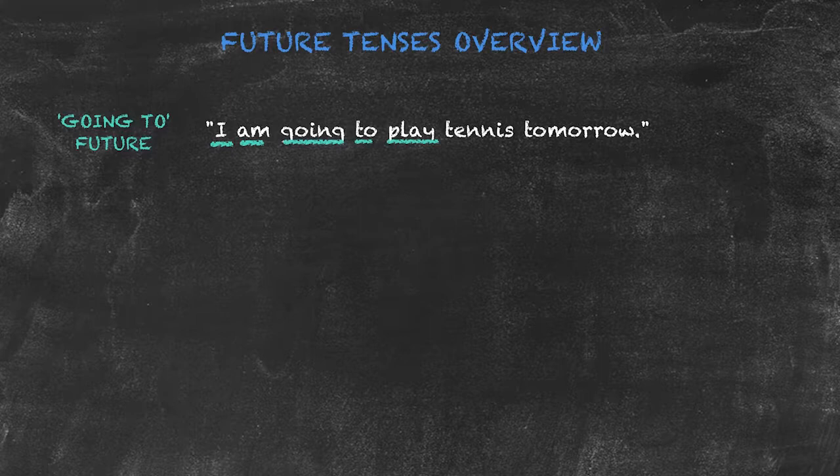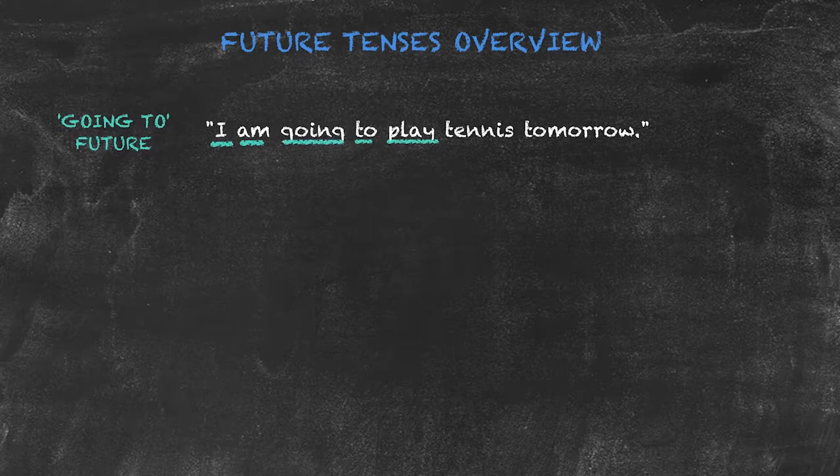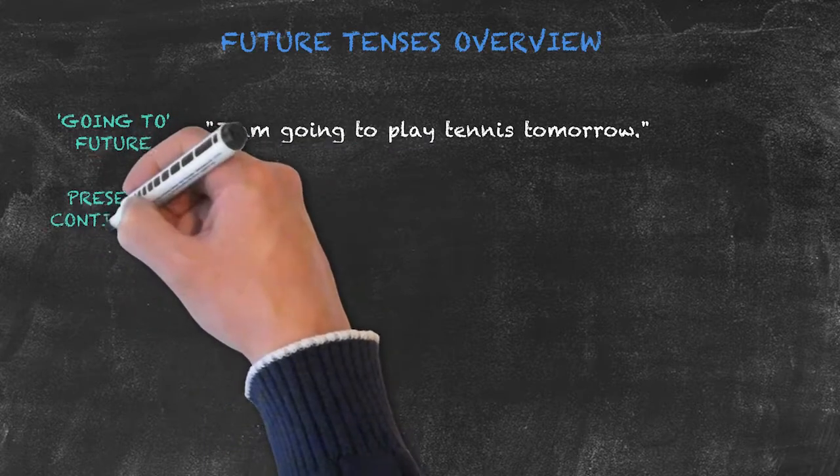The 'going to' future is used for predictions with evidence. For example: I can see a big black cloud overhead. I have some evidence, therefore I can make my prediction—it's going to rain. We can also use the present continuous for the future.